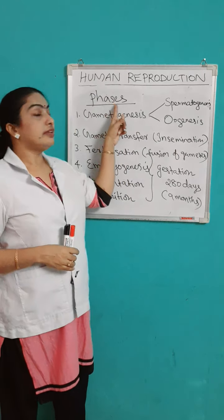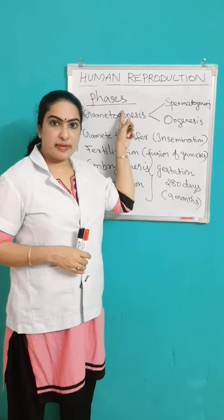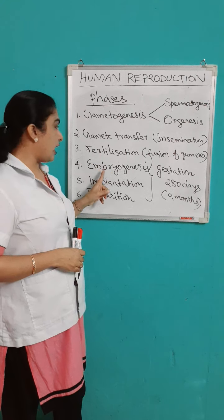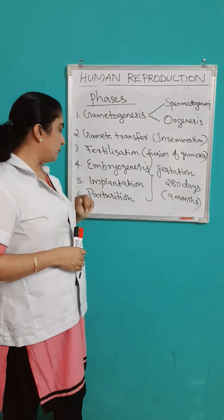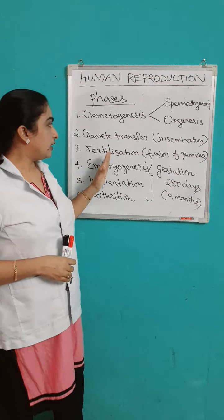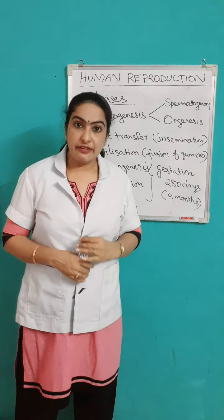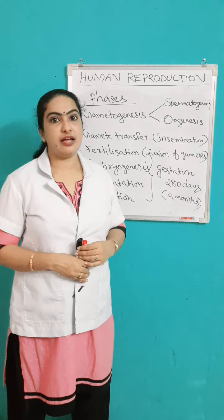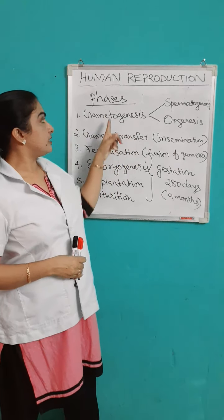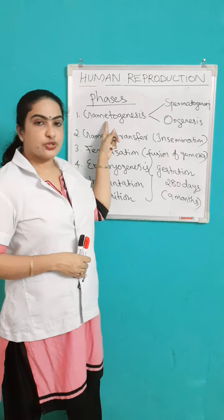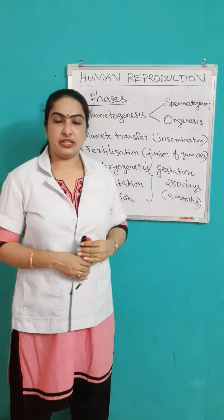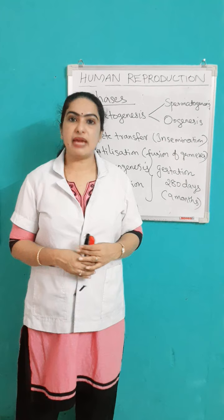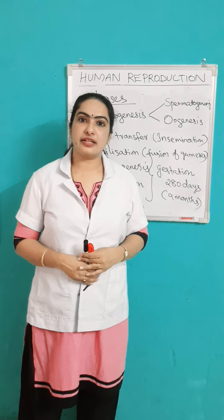Let us see once more. The reproductive phases in human beings are: gametogenesis, gamete transfer, fertilization, embryogenesis, implantation, and parturition. All these events take place in the human body in a particular system. The first process is gametogenesis. We can see in which system all these events take place in the next class, as male and female reproductive systems. Thank you.